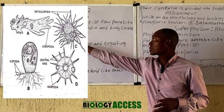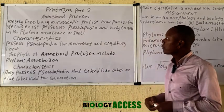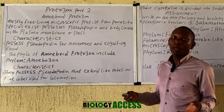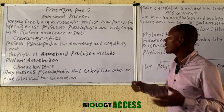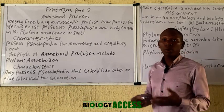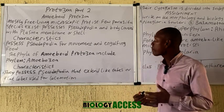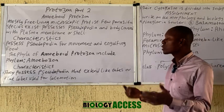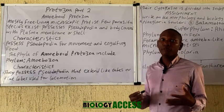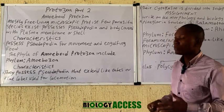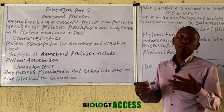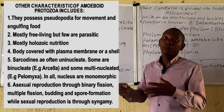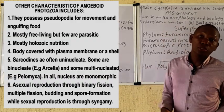The characteristics of the amoeboid protozoa: their body is usually covered with either a plasma membrane or a shell. I've also mentioned the fact that they are mostly heterotrophic. Their mode of reproduction can be by binary fission or multiple fission.